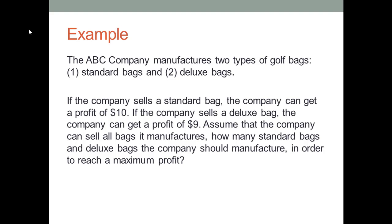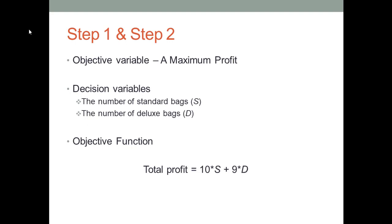The objective is to maximize total profit. The total profit is dependent on the number of bags we sell in each type. We use letter S to denote the number of standard bags and letter D to denote the number of deluxe bags. Then we can build an objective function: total profit equals 10 times S plus 9 times D. The more bags the company sells, the more profit it gets — if there were no manufacturing capacity limits. But that's impossible in reality, so let's look at those constraints.